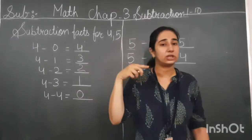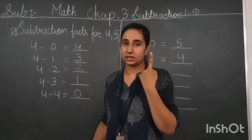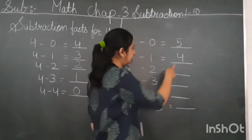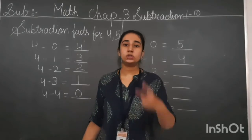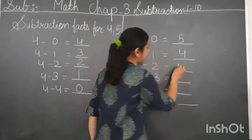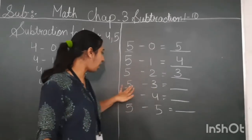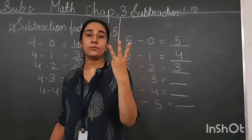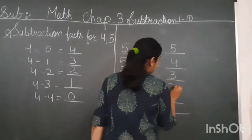You can also apply the finger method: keep the greater number, five, in your mind. Show the number in second place, one, in your fingers. Count before the number you kept in your mind — five before is four. Four is the answer. Five minus two: keep five in your mind, show two in your fingers, count before five — four, three. Three is the answer. Five minus three: keep five in your mind, show three in your fingers, count before — four, three, two. So two is the answer.